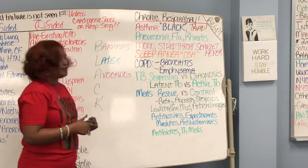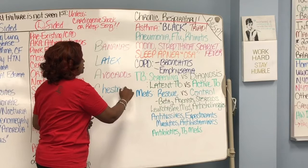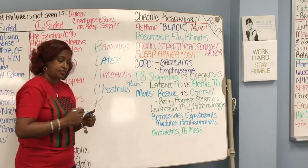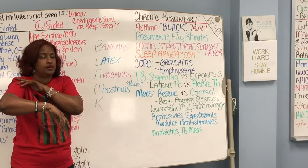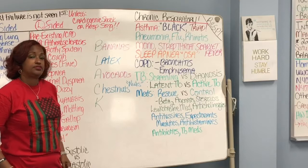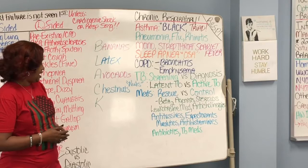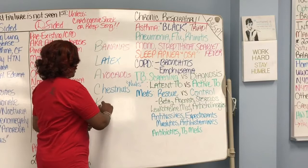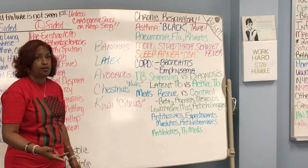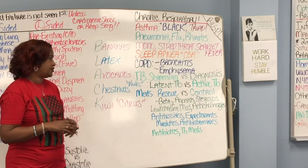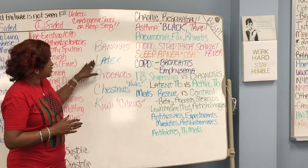Continuing the BLACK mnemonic: C is for chestnuts, or really any nuts — especially tree nuts. My grandson has asthma, eczema, and is allergic to nuts. K is for kiwi — kiwi is a citrus fruit, so the citrus group includes oranges, lemons, kiwi, and strawberries. An allergy to any of those citrus fruits falls in the same category. Most people don't know that, so it's important to keep in mind.